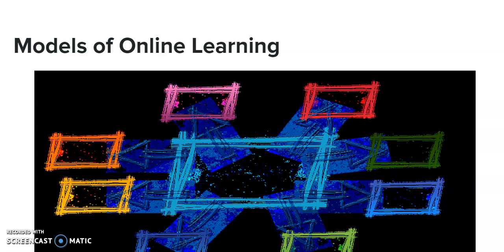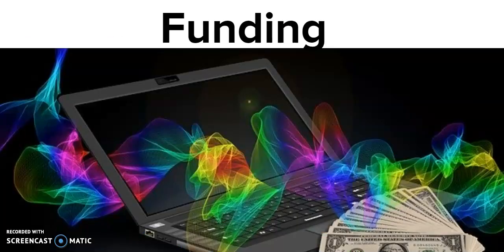The models of online learning can look pretty different, almost like a network. There are different options depending on how the district wants to go. There are state-level options you could check into, consortiums where you can share the creation, distribution, and cost of online learning with other school districts, and you could also use a third-party company that sets up the online learning for you.